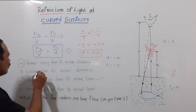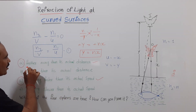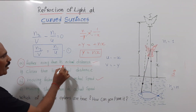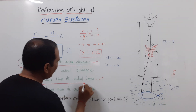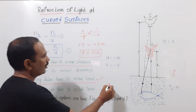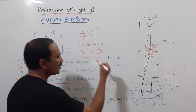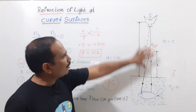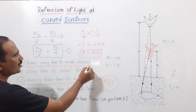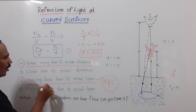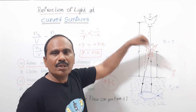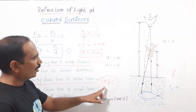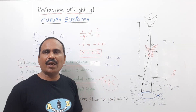From these four options, both Option A and Option C are correct. The bird appears farther away than its actual distance, and the bird appears to be moving faster than its actual speed to the fish.